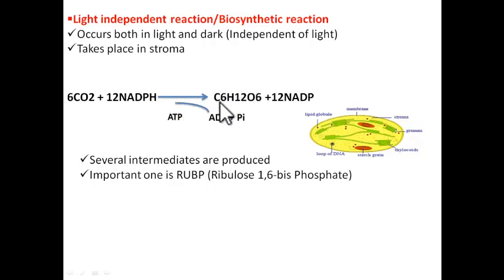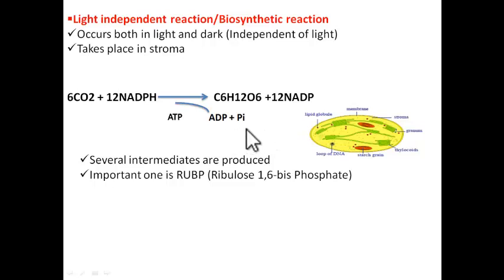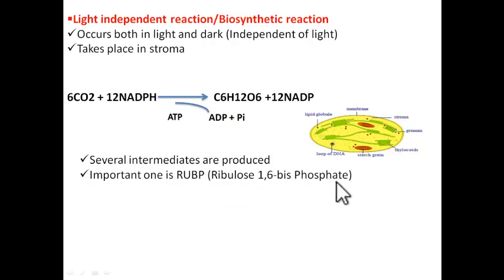This reaction is called the light independent reaction. However, it is not a single-step reaction — it has several intermediates and many steps. One important intermediate is ribulose-1,6-bisphosphate. Remember that name: ribulose-1,6-bisphosphate. It is one of the intermediates in the light independent reaction.